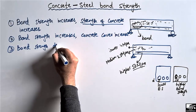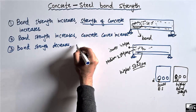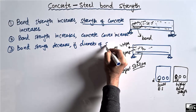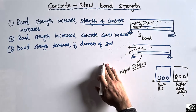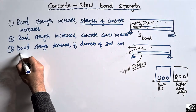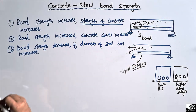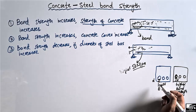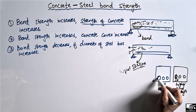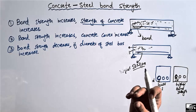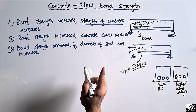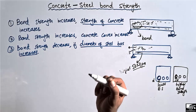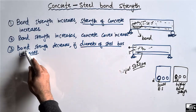The third factor is the diameter of the steel bar. Bond strength decreases if the diameter of the steel bar increases. The higher the diameter of the steel bar being used, the lower the bond strength, because a larger bar takes up more space and leaves less room for bonding. So bond strength is inversely proportional to the diameter of the steel bar.